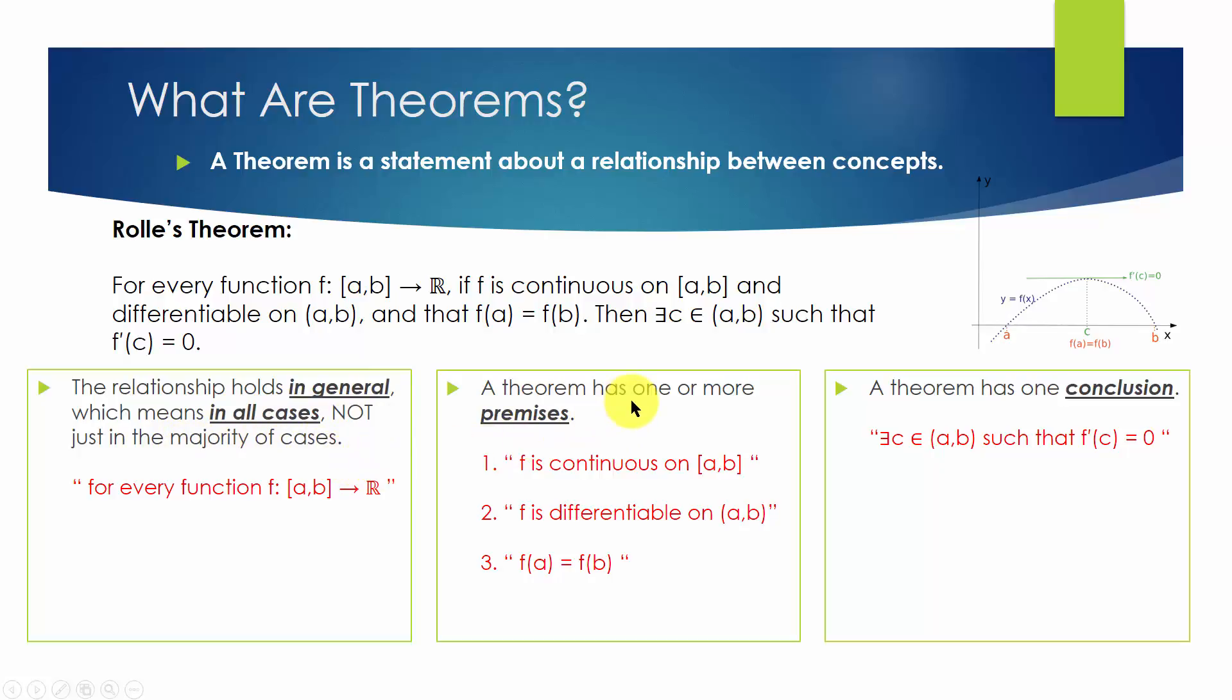Next, we notice that a theorem is made of two parts, its premises and its conclusion. A theorem has one or more premises.